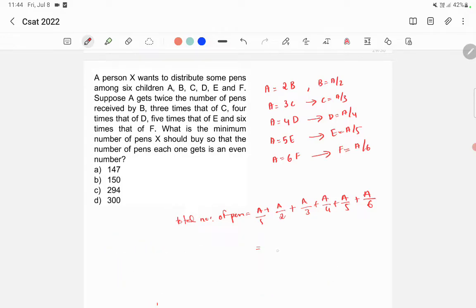So the denominator here is 60. So it will be 60A plus 30A plus 20A plus 15A plus 12A plus 10A. So if you add all these things, you will get 147A by 60.